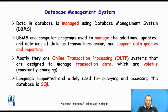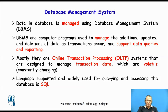Data in a database is managed using a database management system, which is an application software. DBMS programs are used to manage the addition, update, and deletion of data as transactions occur, and they support data queries and reporting. There are two types of queries — an action query, which changes the data, and a select query, which retrieves information or data. The database management system supports both these operations.